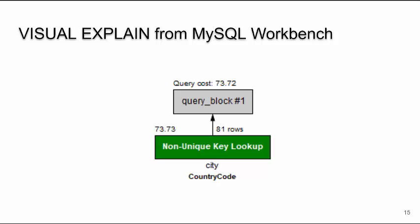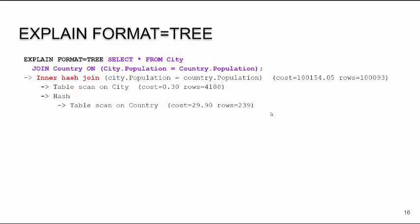Visual Explain you can get from MySQL Workbench, and it gives you the same information but in a better formatted way for most people who are just starting out. It tells you where we're reading our data and the various costs. The cost of this query is 73.72, and how many rows we're going to have to read. With a slightly different query using EXPLAIN FORMAT=TREE, we can see we're selecting star from city, joining it to the country table where city population equals country population, and it tells us we're doing an inner hash join — much faster than our normal nested loop.